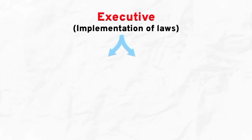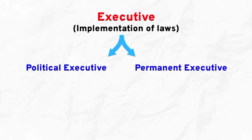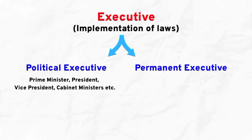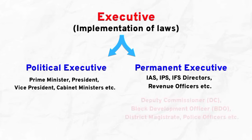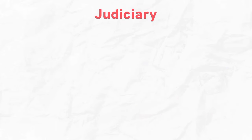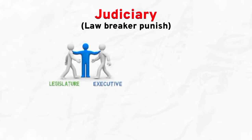The executive power is both political and permanent. The Prime Minister, President, Vice-President, and cabinet ministers hold political power. The permanent executive power includes IAS and IPS officers, such as Deputy Commissioners, Block Development Officers, and police officers. This is the central government executive.